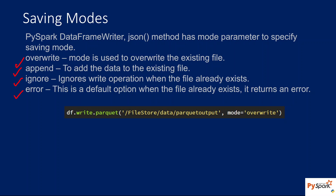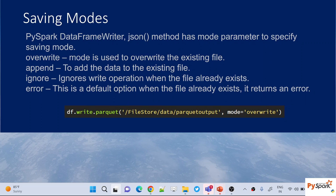Overwrite means it is going to overwrite the existing parquet file data — it will delete the existing data and the new data will be added. Append means it will append the data into the existing file. Let's try to understand append first, then we will come to overwrite so that it makes sense.